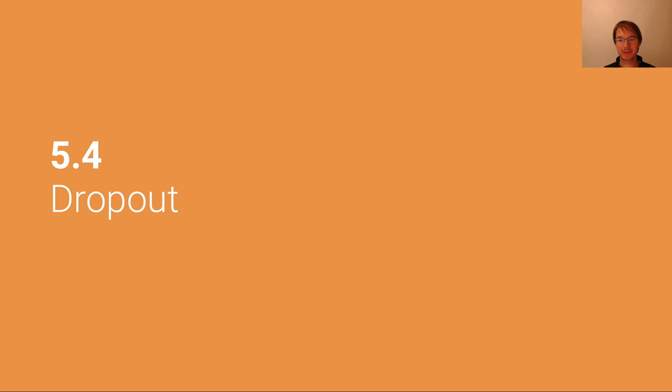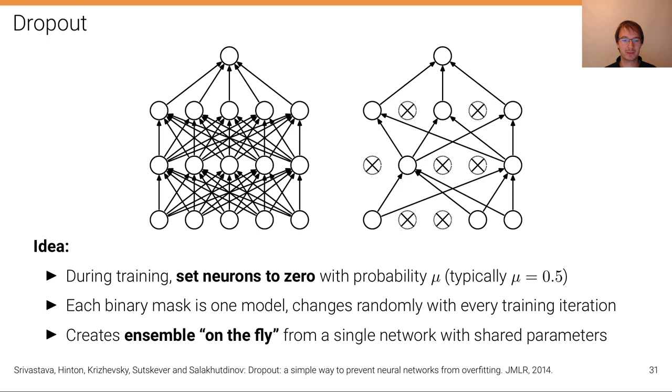A very specific type of ensemble method is dropout. It's also an extremely popular method in modern deep learning as it's very simple and efficient, and in many cases for many models also quite effective. So the idea of dropout...